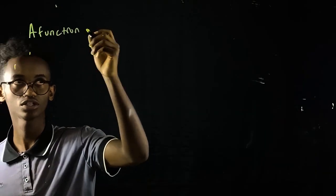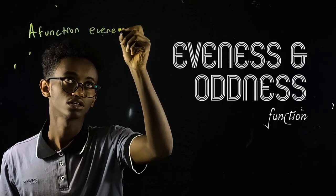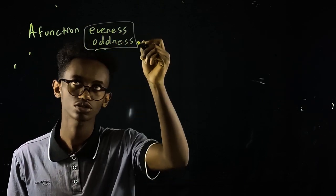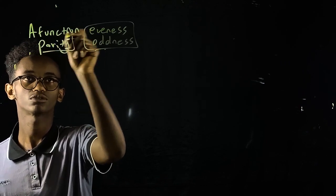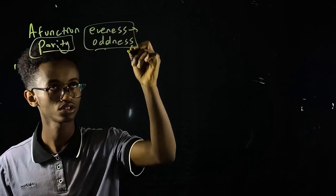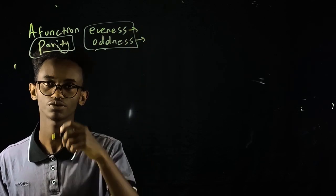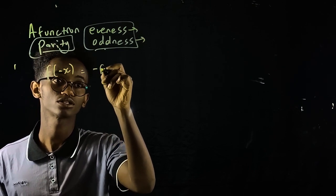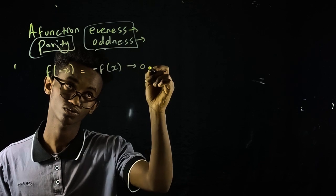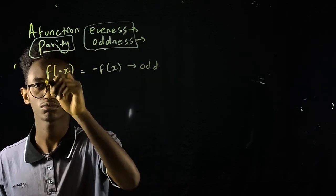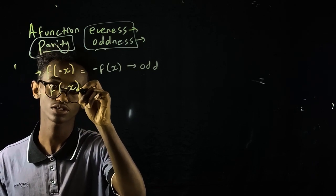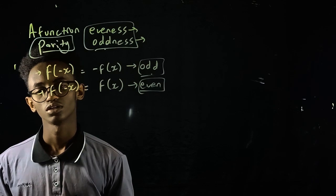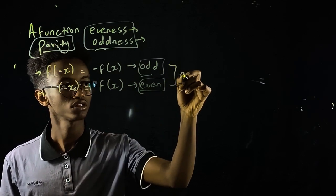Ok, I'm going to talk about evenness and oddness of functions. For example, f(-4x) minus f(x). If f(-x) equals f(x), the function is even. If f(-x) equals negative f(x), it's odd. Otherwise, it is neither even nor odd.